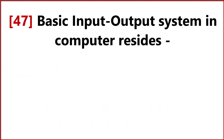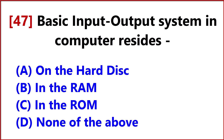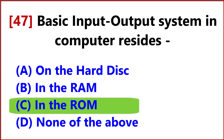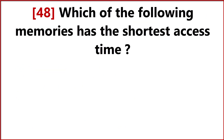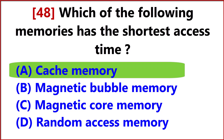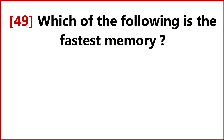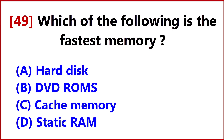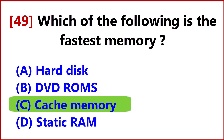The basic input-output system in a computer resides Answer, Option C, in the ROM. Which of the following memories has the shortest access time? Answer, Option A, Cache Memory. Which of the following is the fastest memory? Answer, Option C, Cache Memory.